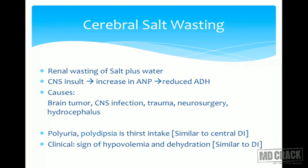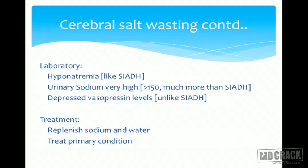Coming to cerebral salt wasting: we have a problem in the CNS. Any insult—tumor, infection, trauma, surgery, or hydrocephalus—gives rise to increased atrial natriuretic peptide hormone or ANP. This ANP reduces ADH concentration. The problem in cerebral salt wasting is the patient is losing salt and water, so he has polyuria associated with hyponatremia. We have polyuria and polydipsia in both cerebral salt wasting and diabetes insipidus, especially when the patient is conscious and thirst is intact.